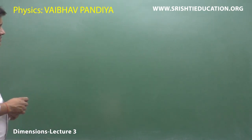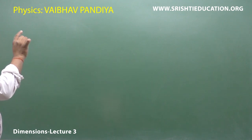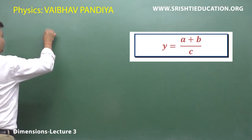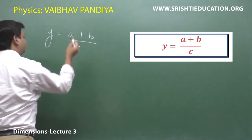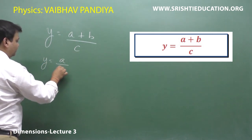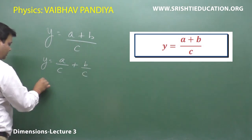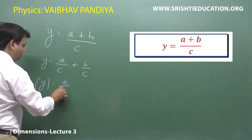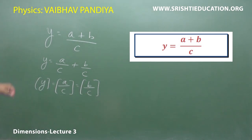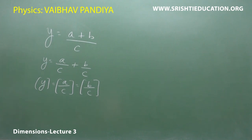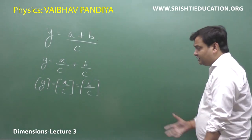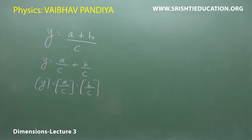Next, suppose the equation is y equals a plus b divided by c. You can split the RHS by taking LCM: y equals a/c plus b/c. The dimensional formula of y will be the same as a/c and the same as b/c. Alternatively, you can cross-multiply to find the answer. These are some illustrations involving algebraic equations for finding dimensional formulas.